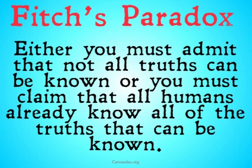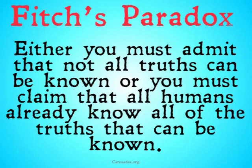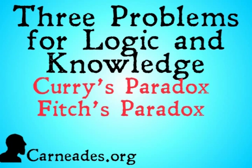That was Fitch's Paradox. Either you must admit that not all truths can be known, or you must claim that all humans already know all of the truths that can be known — that we collectively are omniscient. If you didn't follow all that logic, that is the takeaway: either not all truths can be known, or we are collectively omniscient.